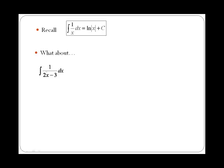In this case, you have to realize that 1 over x and 1 over 2x minus 3 are pretty similar, but the only thing that has happened is 2x minus 3 has replaced x. Therefore, we have the composition of functions. If you want to check if you can do substitution, what we have to ask is if this function is g of x, do we have the derivative of g of x multiplying, or almost?